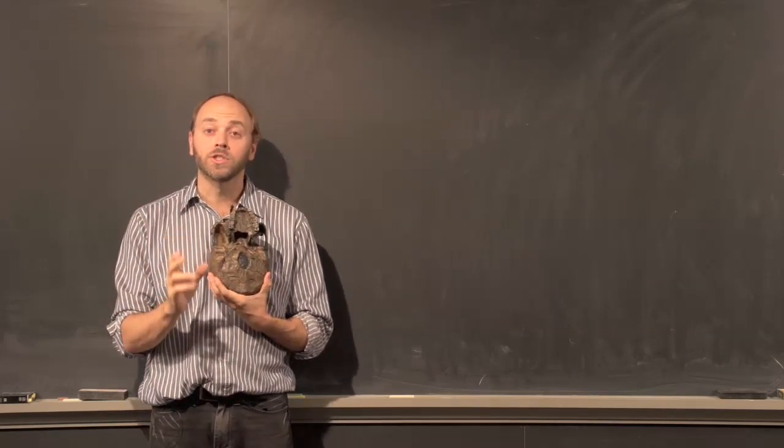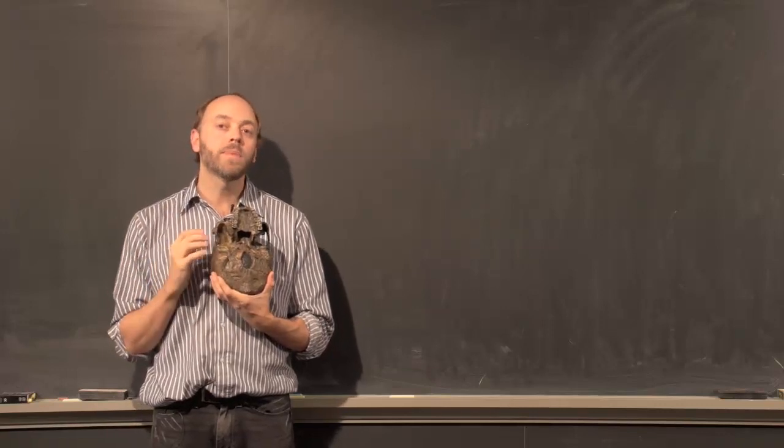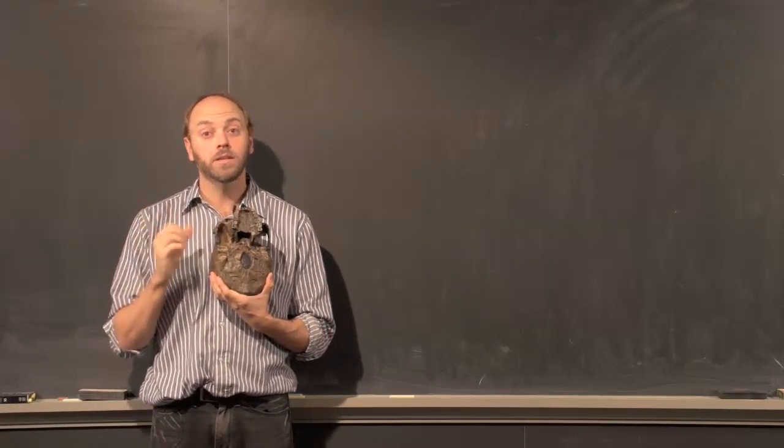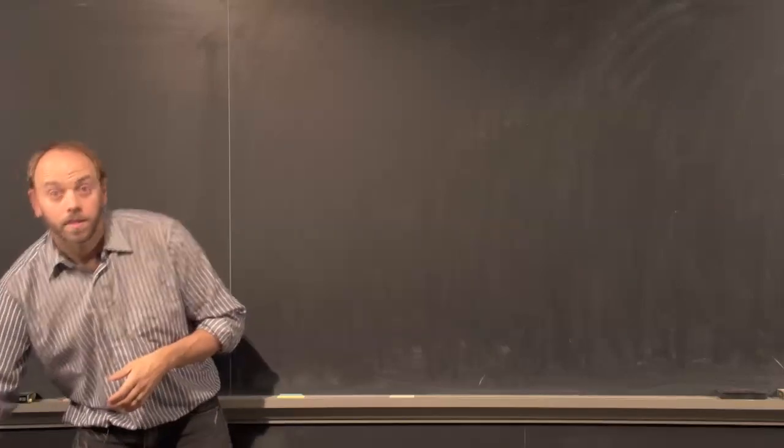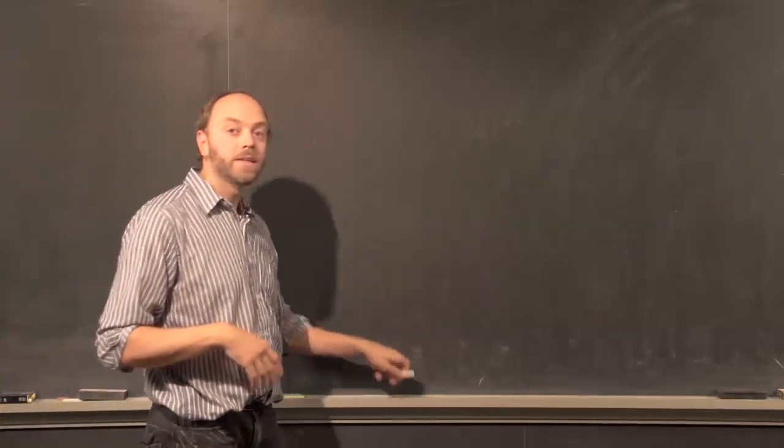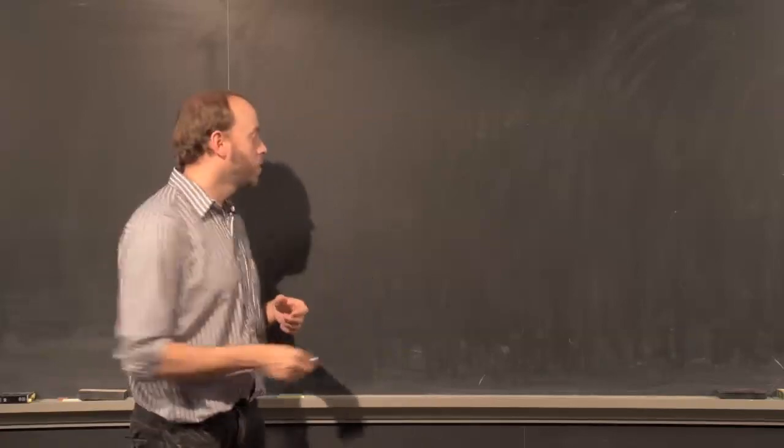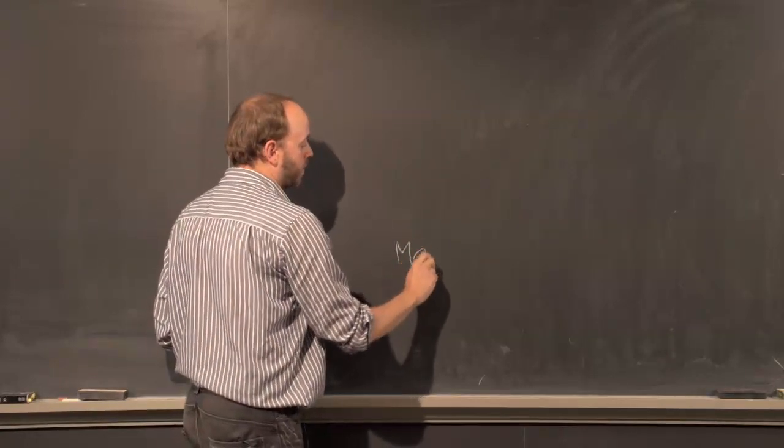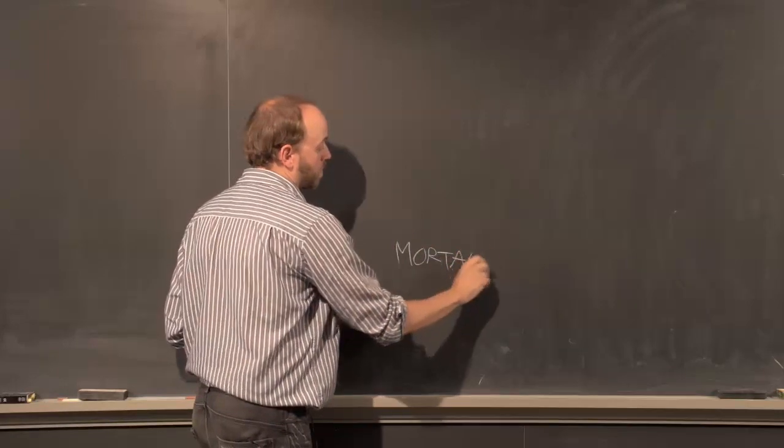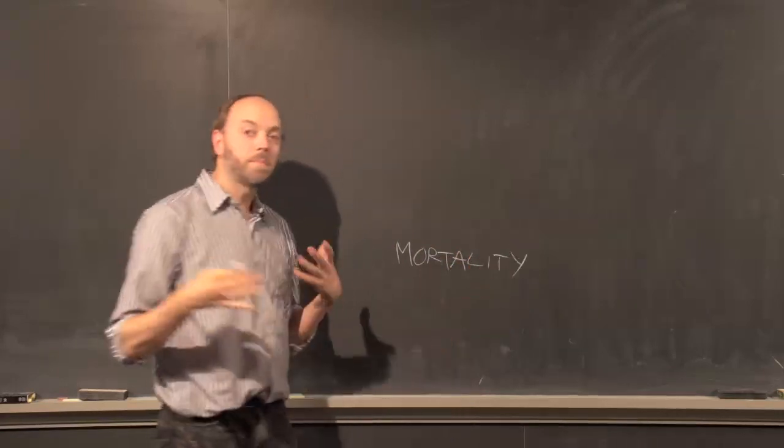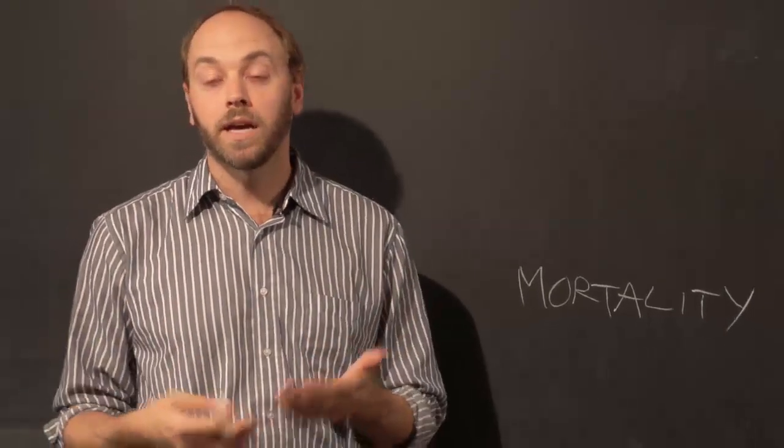This demographic change is hugely important for how we think about evolutionary processes, particularly in the late Pleistocene. You'll recall from the very beginning of the semester, I introduced you to some basic aspects of demography, and one of the things I showed you was a mortality curve. This is a curve that basically illustrates the probability of death at any point in life.